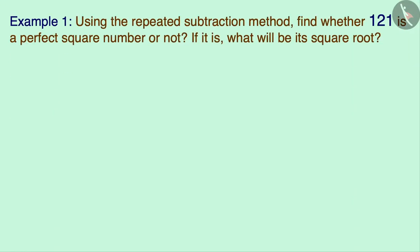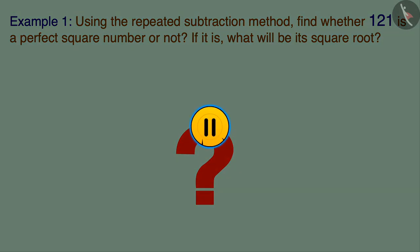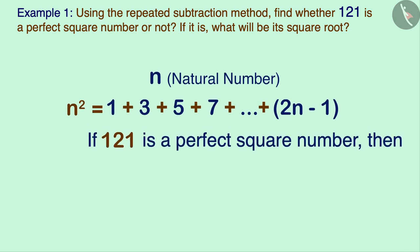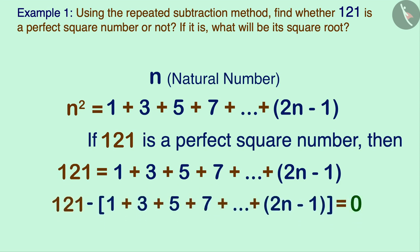Using the repeated subtraction method, find whether 121 is a perfect square number or not, and if it is, what will be its square root. We know that for any natural number n, the square of n equals the sum of its consecutive odd numbers up to n minus 1. So if 121 is a perfect square, it will equal the sum of the first n consecutive odd numbers, and subtracting those consecutive odd numbers from 121 should give us zero.